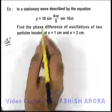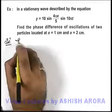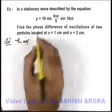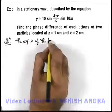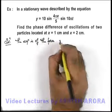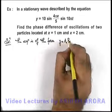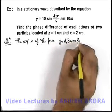In this situation the very first thing we can see is that the equation which is given here is of the form which we have already studied: y = A₀ sin(kx) sin(ωt).